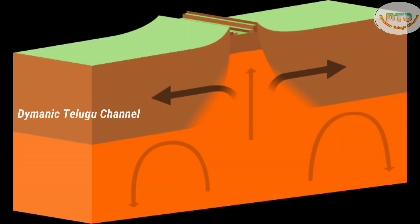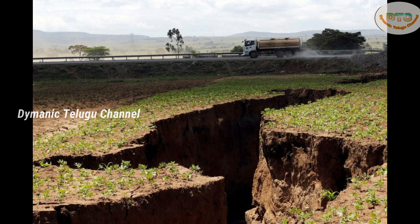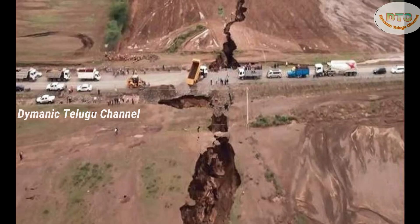Divergent Plate Boundary is where two plates move in opposite directions away from each other. There are two types: land divergence and sea divergence. For example, there is a Rift Valley example. In present day, we have seen the Divergent Plate Boundary in Africa, specifically the East African Rift.